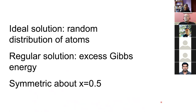To summarize: the ideal solution assumes a random distribution of atoms. Most solutions are not random, and therefore there is an excess Gibbs free energy term which defines the regular solution model. These excess free energies tend to be symmetrical about a concentration of one half.